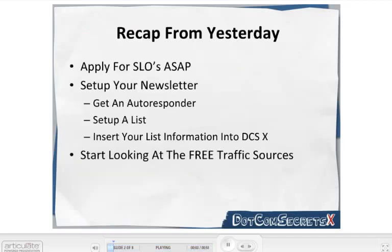First I want to recap everything from yesterday and make sure you did your homework. Step one: apply for the SLOs ASAP — that only takes about a minute. If you haven't done that yet, pause this video and go finish that. Step two: set up your email newsletter — pick an autoresponder, sign up for the service, set up a list, and insert that information into Dot-Com Secrets X. Don't be the person who watches all the videos first then gets started. Just trust me and do these steps now.